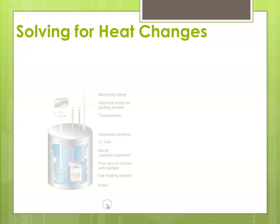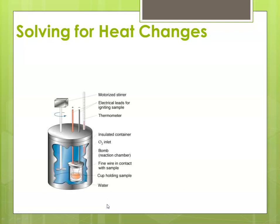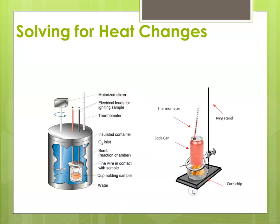So when we're solving for heat changes, we might use a very complicated bomb calorimeter, like this one that we've talked about previously. Or in this case, we're going to use something really pretty rudimentary. And in this case, you'll see I've got a ring stand, I've got a little aluminum pan, with, in this case, we're going to simulate what would happen if we lit a corn chip on fire underneath a soda can.